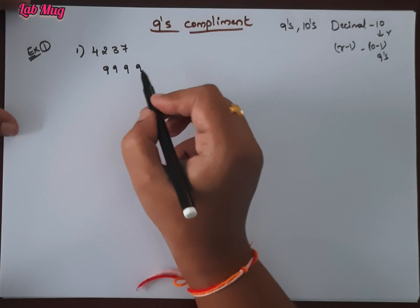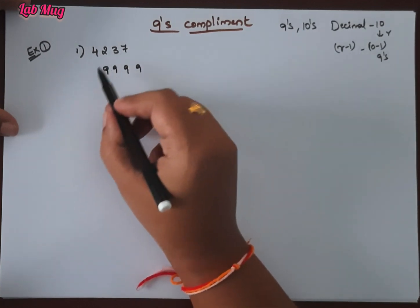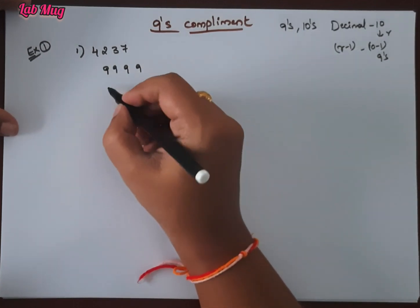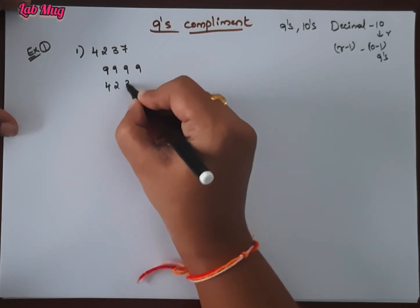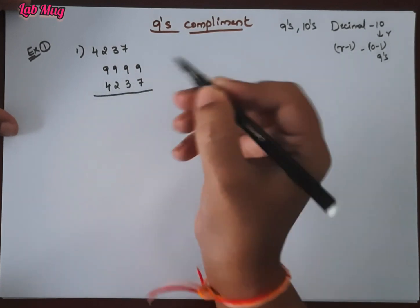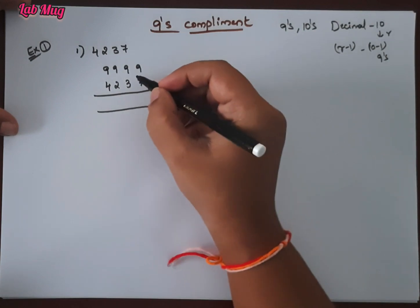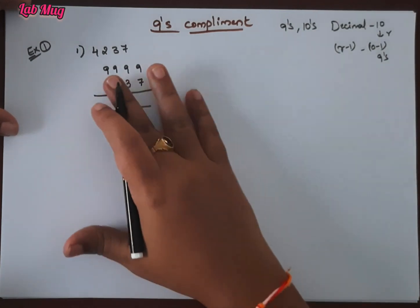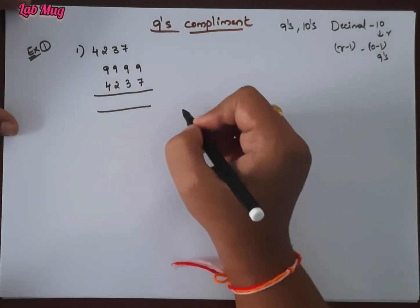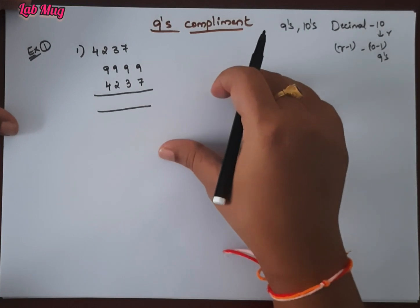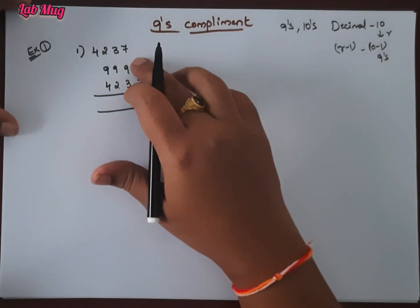So four 9's: 9, 9, 9, 9. You can first subtract 4237. That is 4, 2, 3, 7 from 9999.